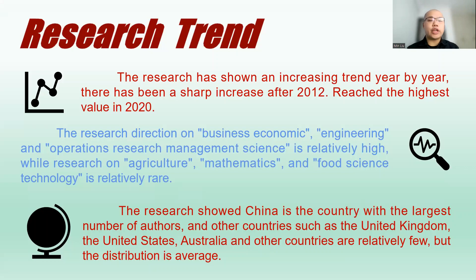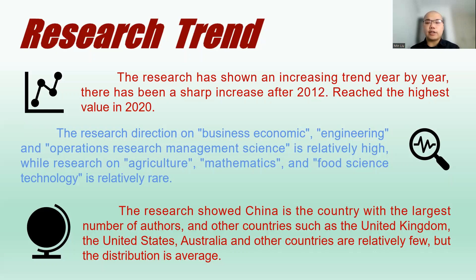The trend in this research shows an increasingly growing trend year by year. There have been sharp increases after 2012, with the highest value in 2020 because COVID-19 emerged in 2019. The research direction on business, economy, engineering, and operations research management is relatively high, while research on agriculture, mathematics, and food science technology is relatively rare. The research shows that China is the country with the largest number of authors, and other countries such as the United Kingdom, the United States, and Australia are also represented, with an average distribution.